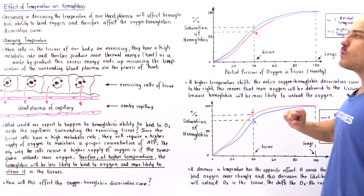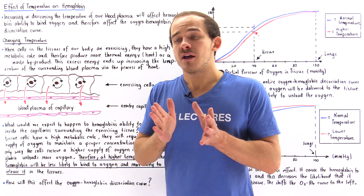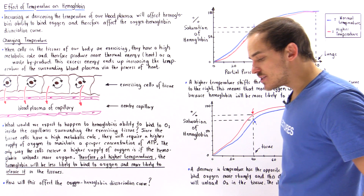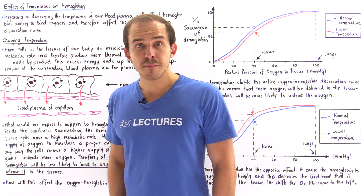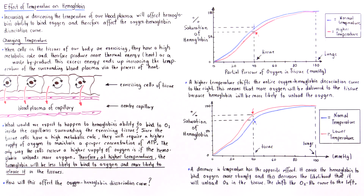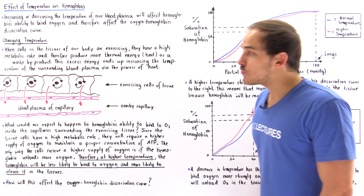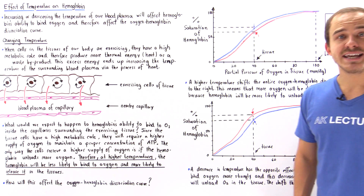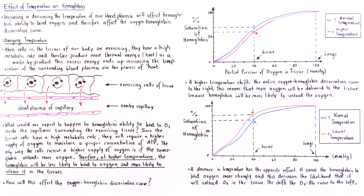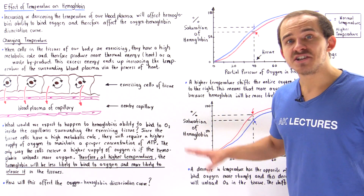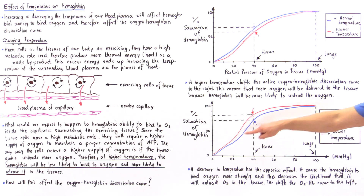What happens if we decrease our temperature? Suppose our cells are now exercising less than they normally do. They produce less thermal energy, so the temperature within the blood plasma of the capillary drops. Since the cells are exercising less, they need less oxygen, and so hemoglobin will be less likely to release and unload oxygen and more likely to bind to it. That's exactly why in this case, decreasing temperature shifts the entire curve to the left with respect to the original blue curve.